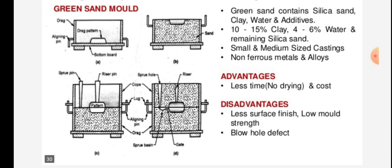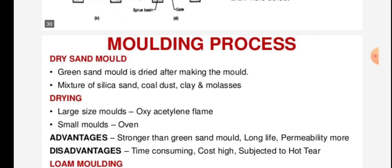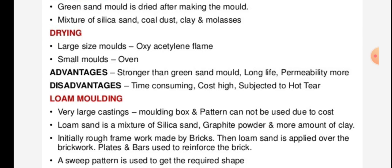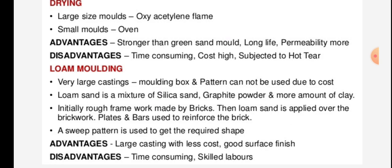Dry sand mold: this is a green sand mold that is dried after making. The mold mixture consists of silica sand, coal dust, clay, and molasses. Drying is done in large size molds using an oxy-acetylene flame, and in small molds using other methods. Advantages: stronger than green sand mold, longer life, and better permeability. Disadvantages: time consuming, higher cost, and subjected to hot tear.